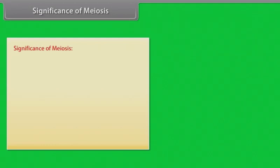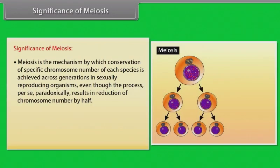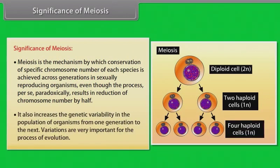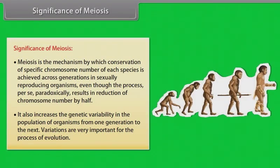Meiosis is the mechanism by which conservation of specific chromosome number of each species is achieved across generations in sexually reproducing organisms, even though the process results in reduction of chromosome number by half. It also increases the genetic variability in the population of organisms from one generation to the next. Variations are very important for the process of evolution.